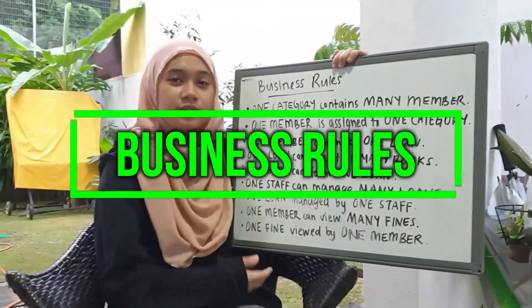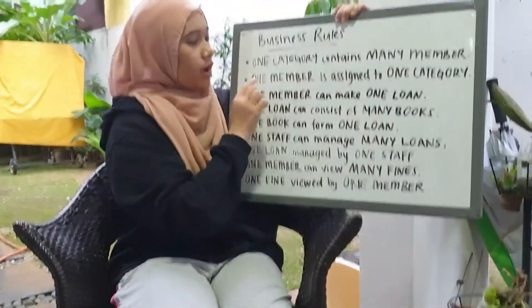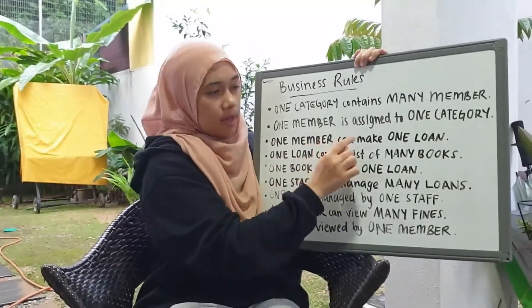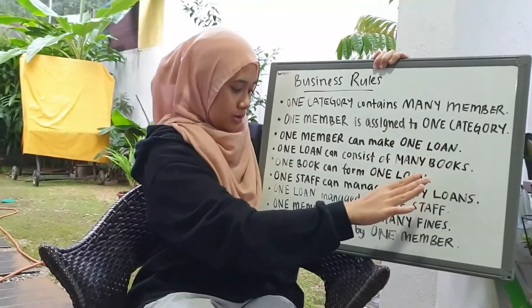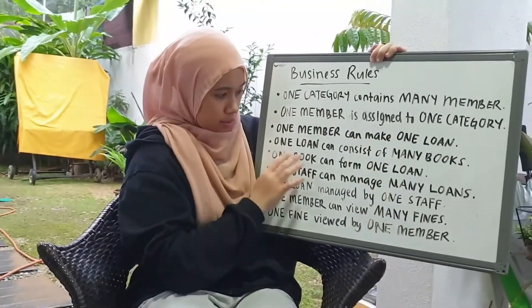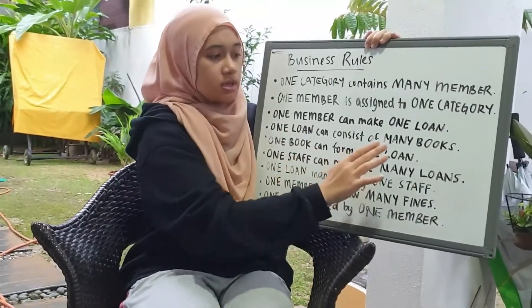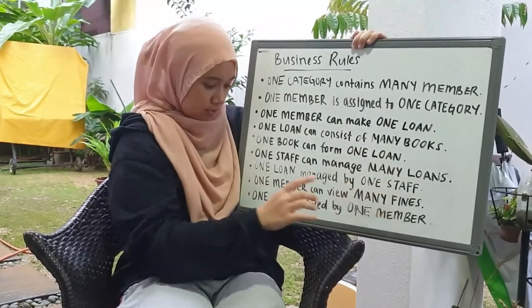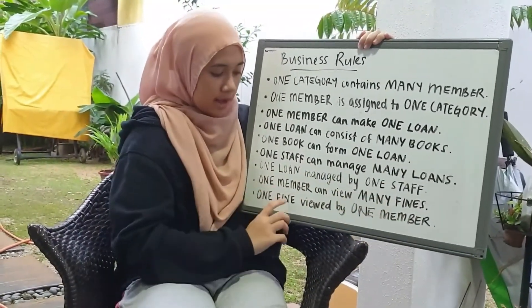There are nine business rules. One category contains many members; one member is assigned to one category. One member can make one loan. One loan consists of many books. One book can form one loan. One staff can manage many loans. One loan is managed by one staff. One member can give many fines. One fine is viewed by one member.